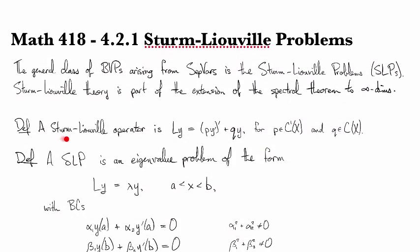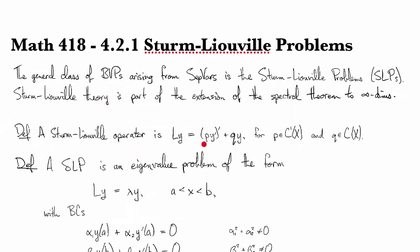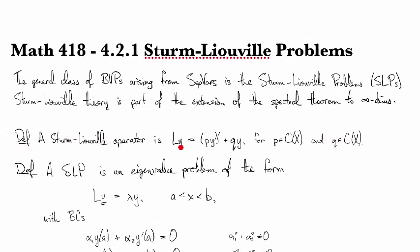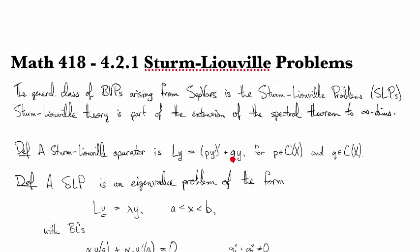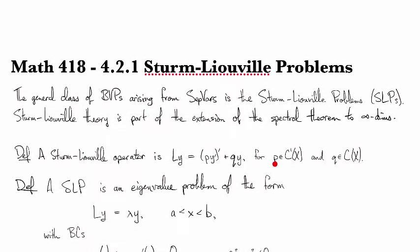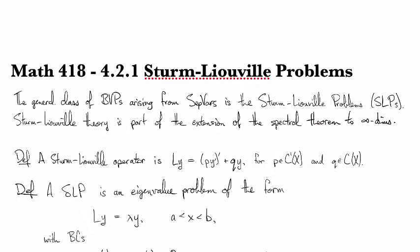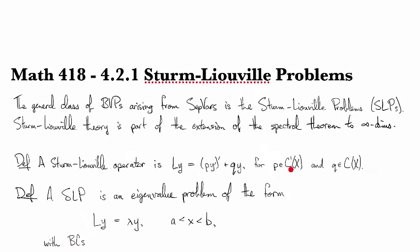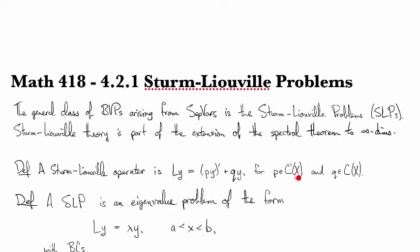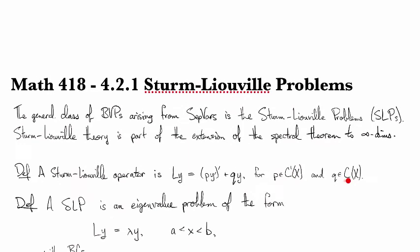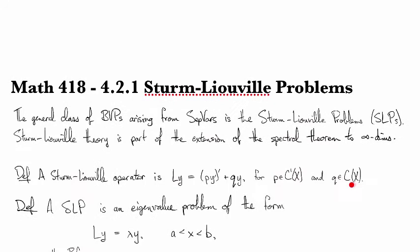A Sturm-Liouville operator is an operator of this form. It takes the function y to the derivative of py' plus qy, where p is some function p of x, which needs to be continuously differentiable. The C1 here indicates that the first derivative needs to be continuous. q just needs to be continuous, so it's C0, or just C.